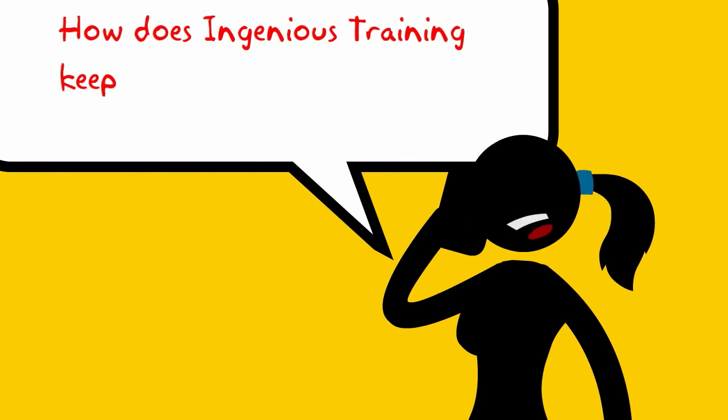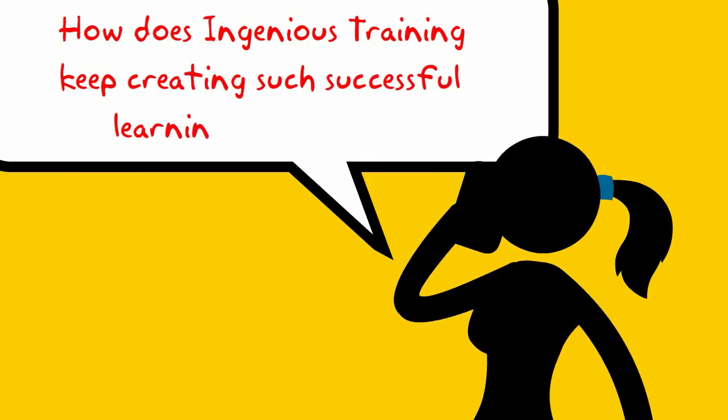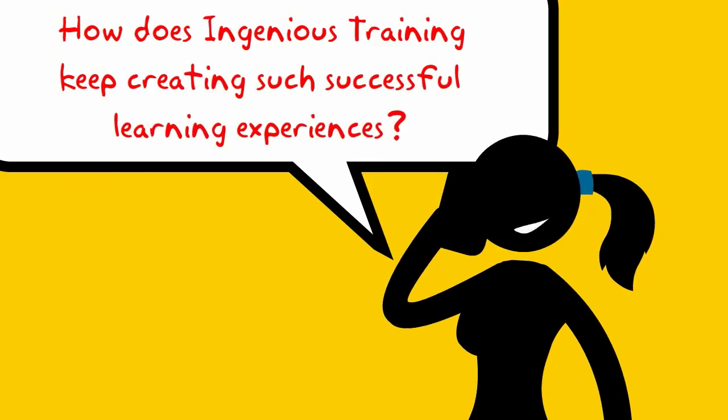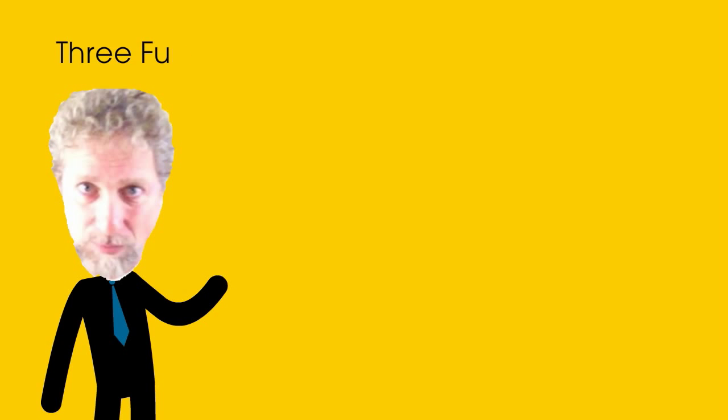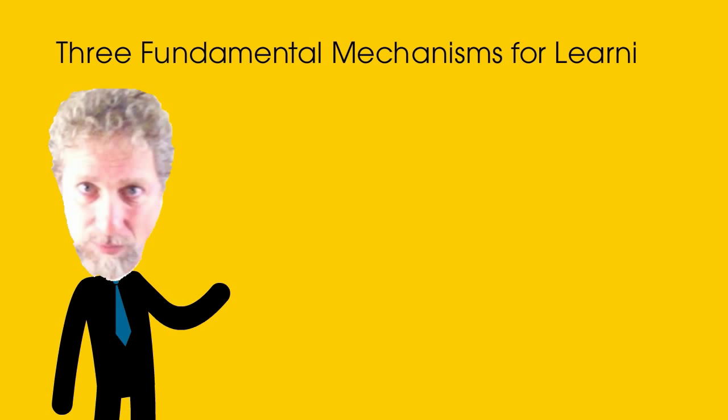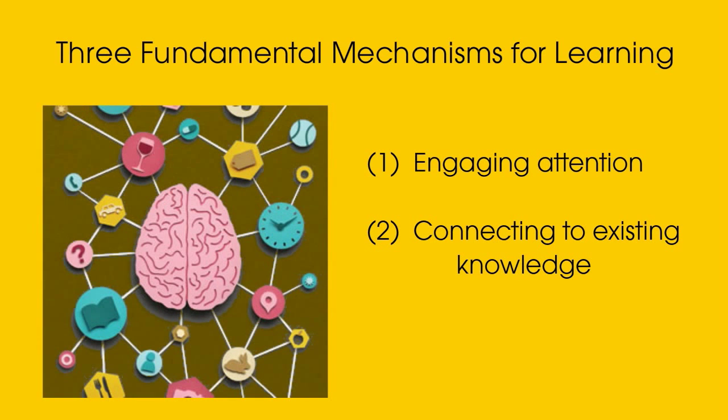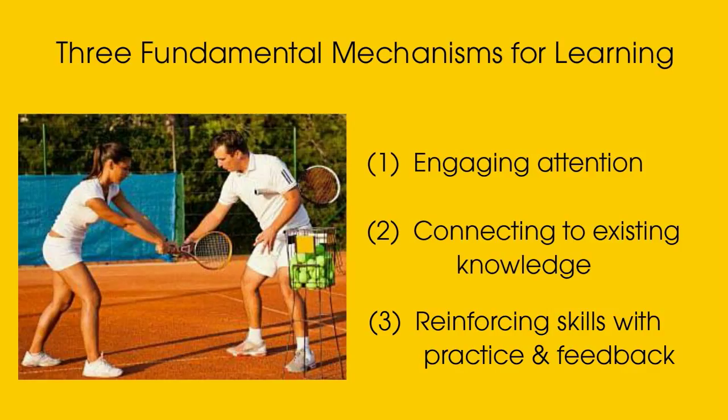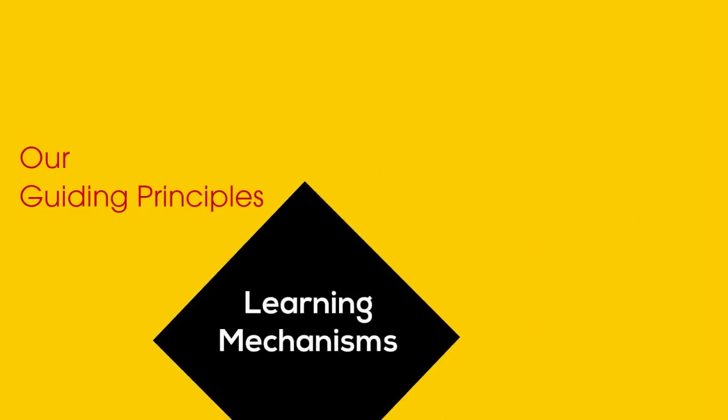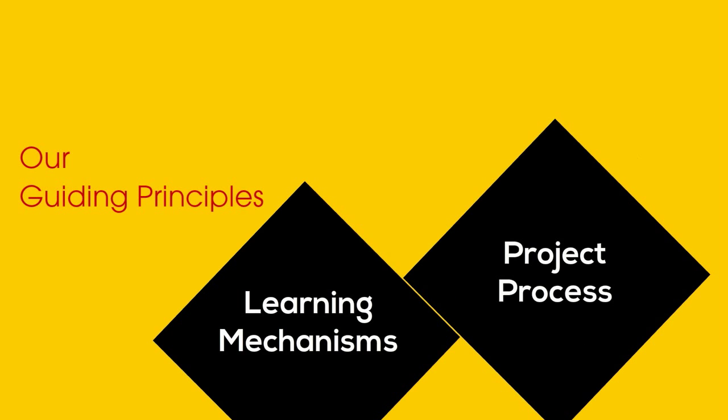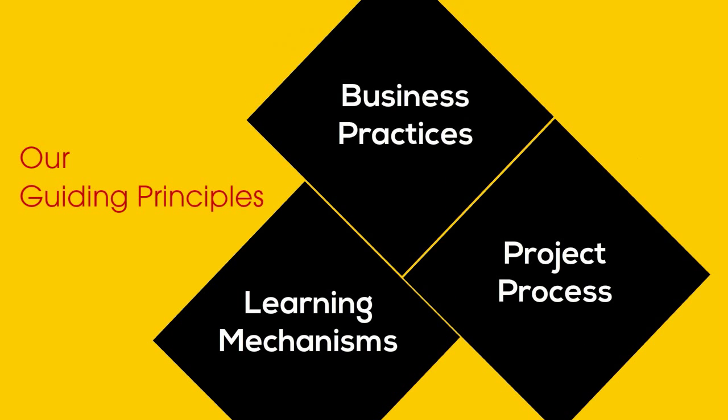So, when folks ask me how we at InGenius Training keep creating such successful learning experiences, I tell them it's by always focusing on the three core mechanisms of teaching and learning: engaging attention, connecting new information to existing knowledge, and reinforcing new skills with practice and feedback. These are just some of the fundamental ideas that help us consistently deliver the high quality of work our clients expect.